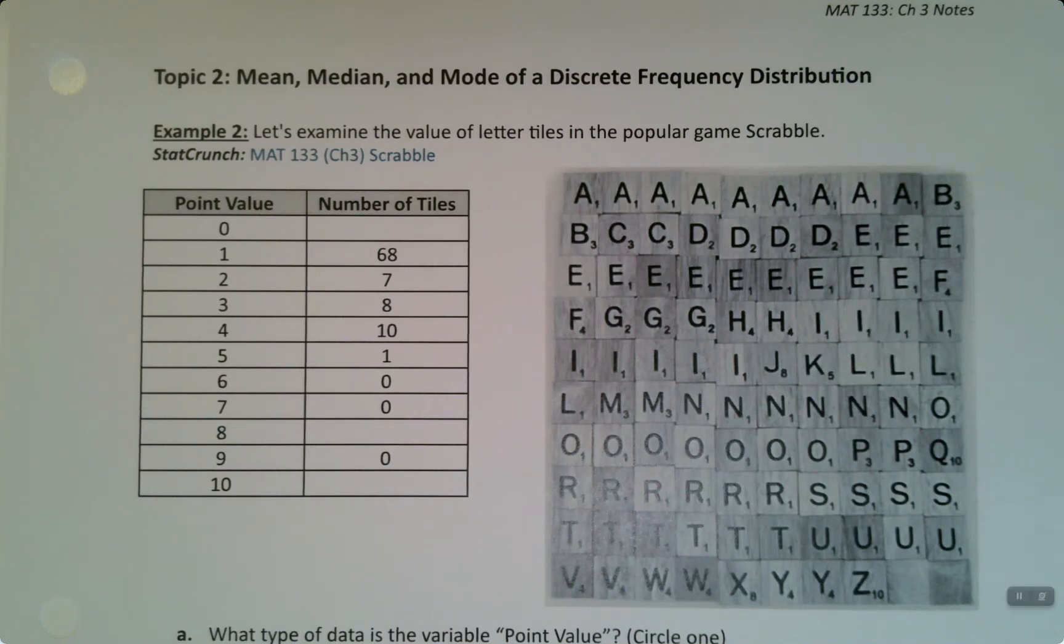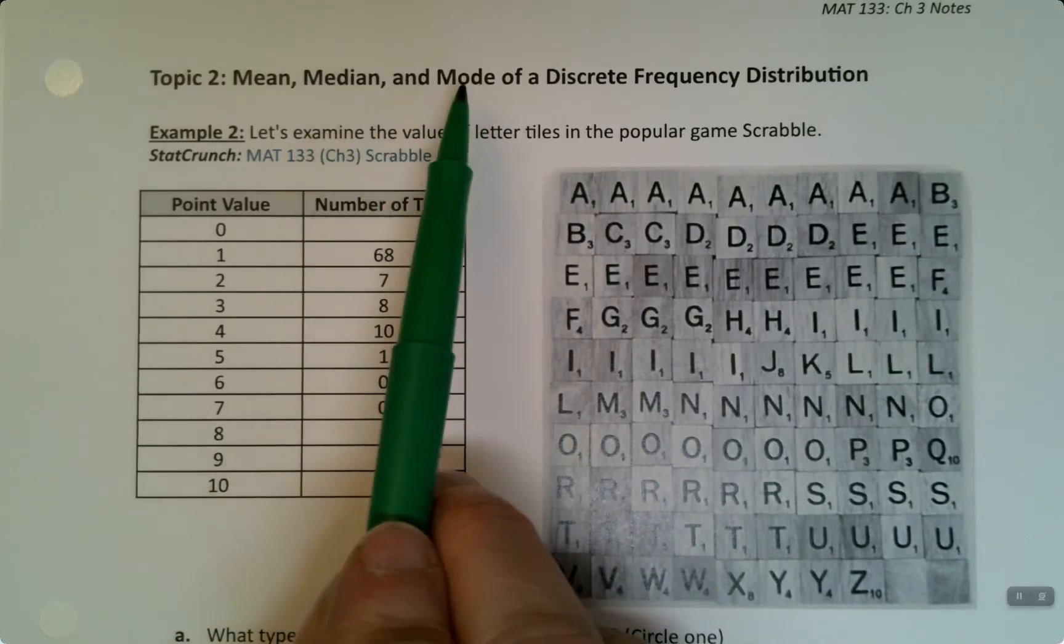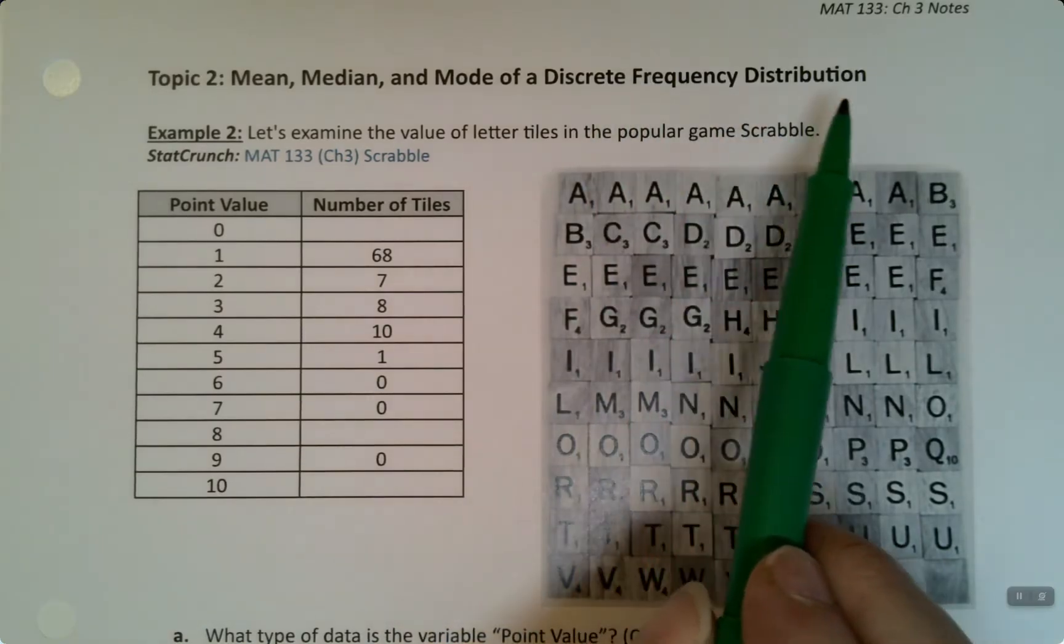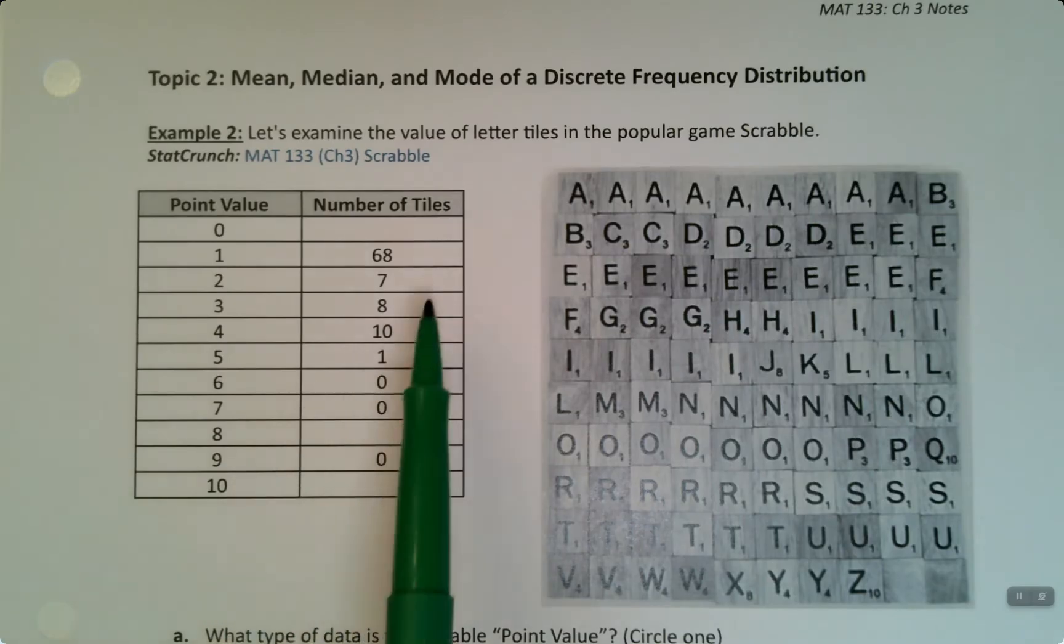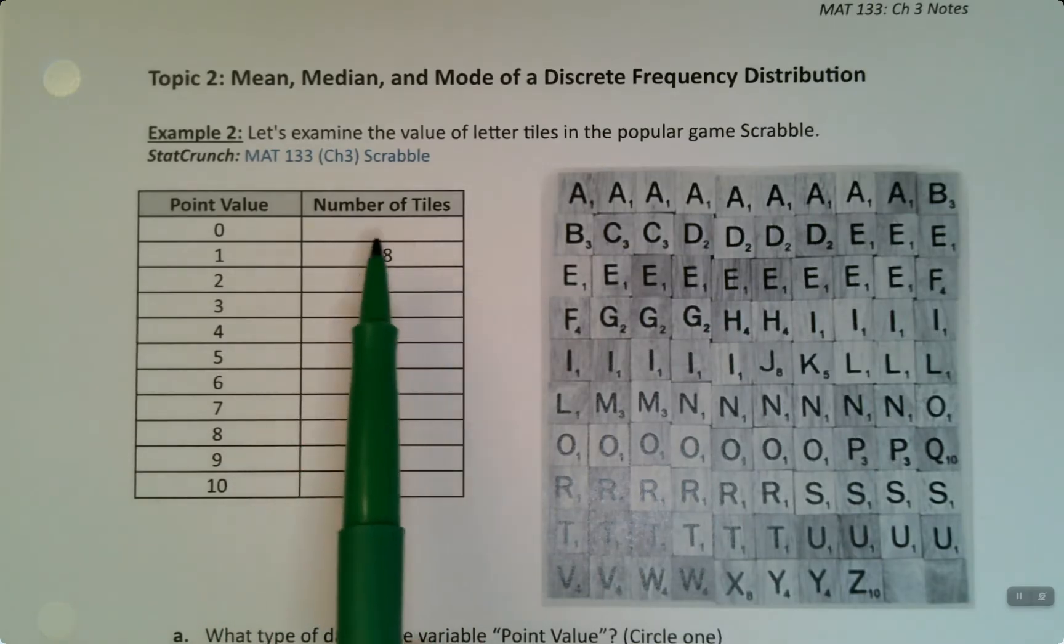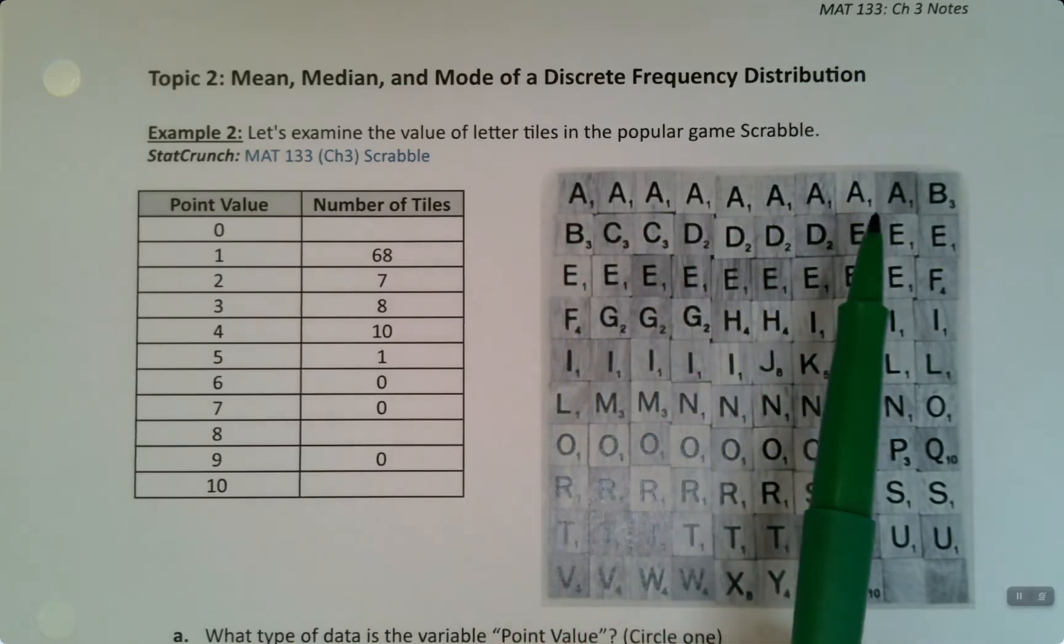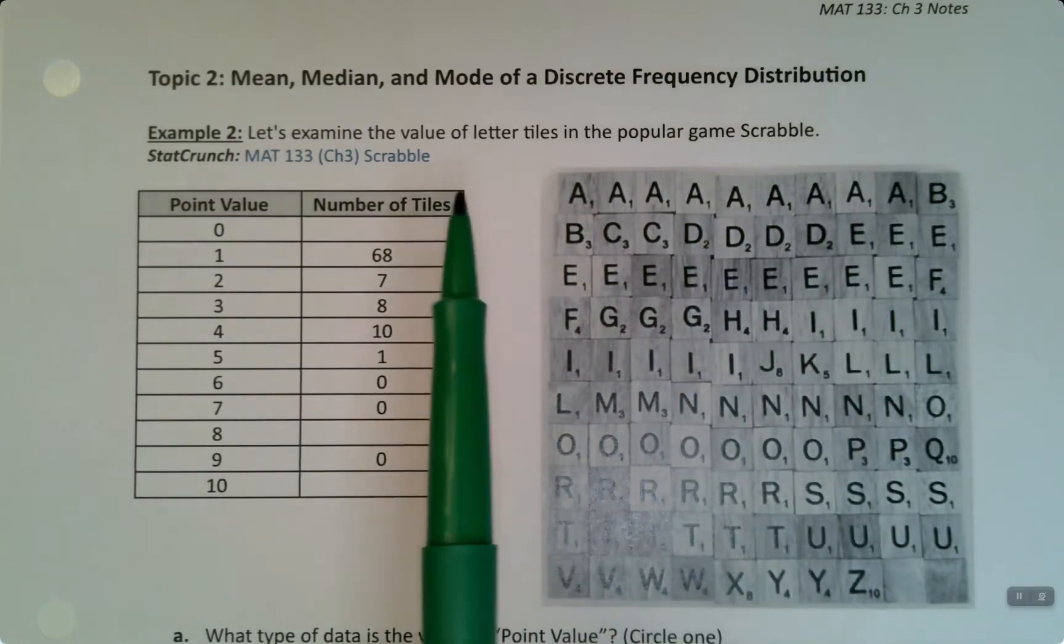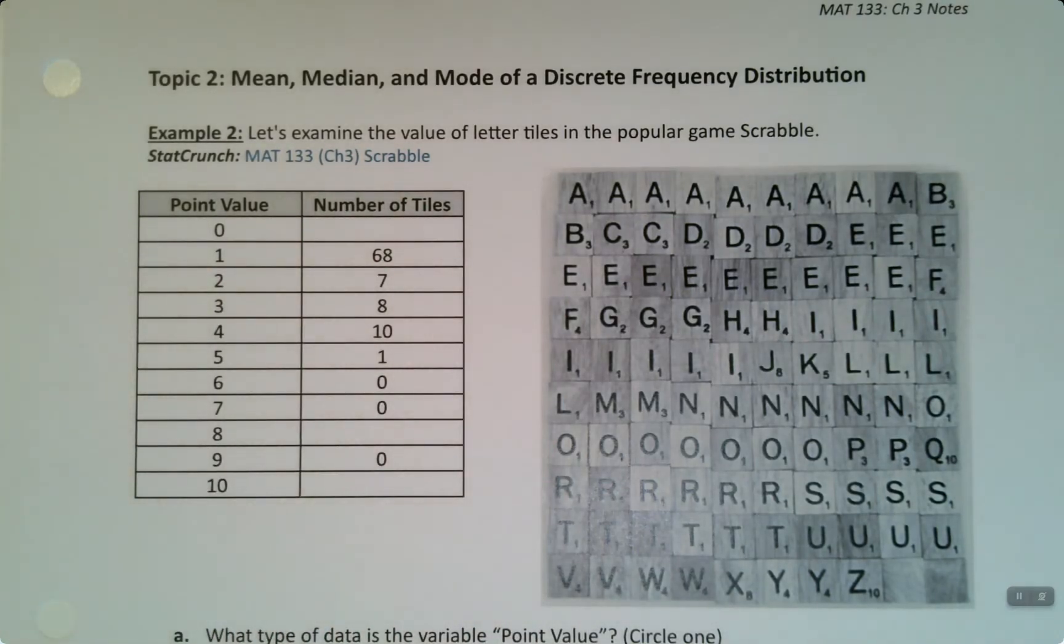We want to take what we've learned about weighted mean and expand on it. We're going to learn how to find the mean, median, and mode for a discrete frequency distribution, which is this guy right here. Those are discrete values and these are frequencies. There's 68 tiles in Scrabble that are worth one point. We're going to examine the value of letter tiles in the game Scrabble, and this data set is available on StatCrunch if you're interested.